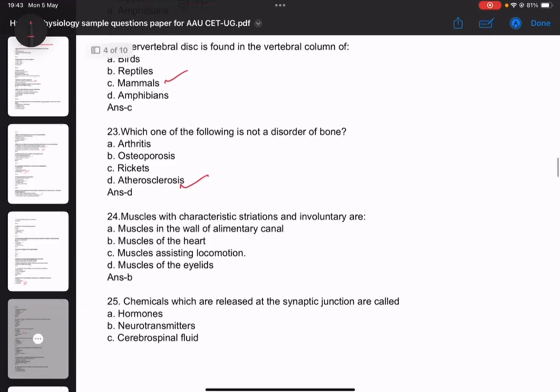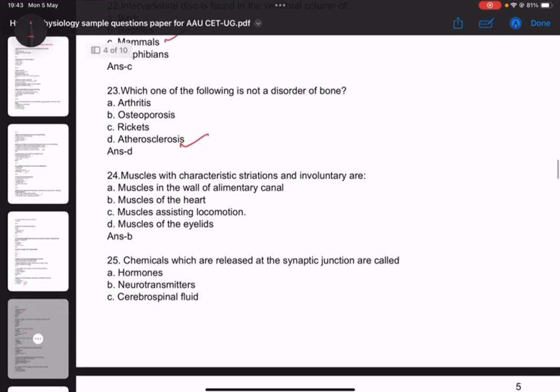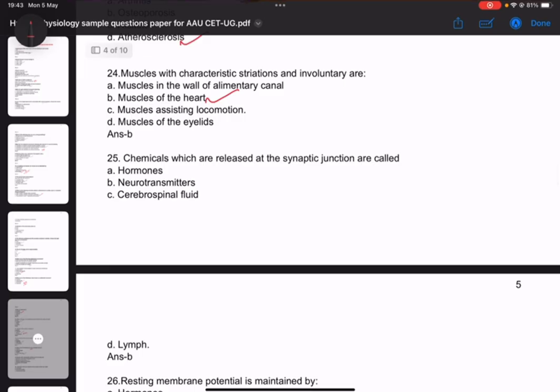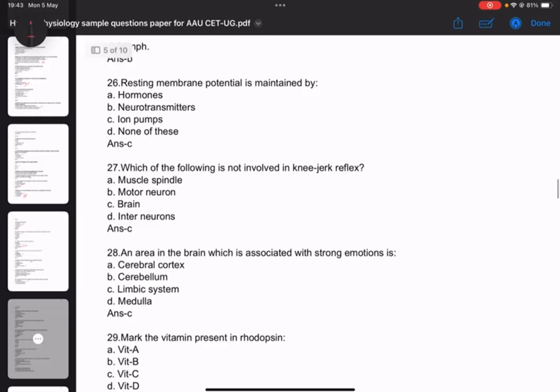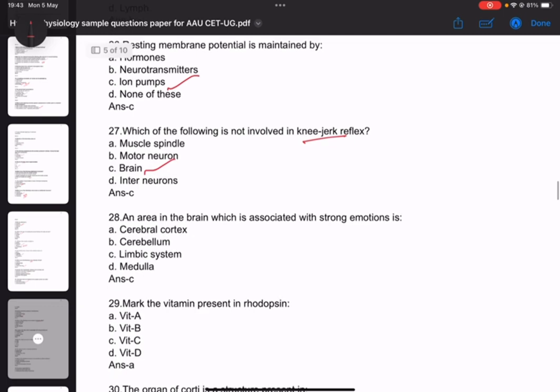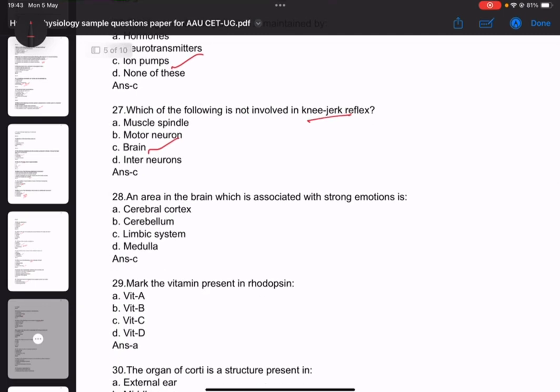Atherosclerosis. Question twenty-three: Cardiac muscle has characteristic striations and is involuntary. Question twenty-four: Chemical released at synaptic junction is called neurotransmitter. Question twenty-five: Resting membrane potential is maintained by ion pumps. Question twenty-six: Which is not involved in the reflex arc. Question twenty-seven: Brain area associated with strong emotion is limbic system.